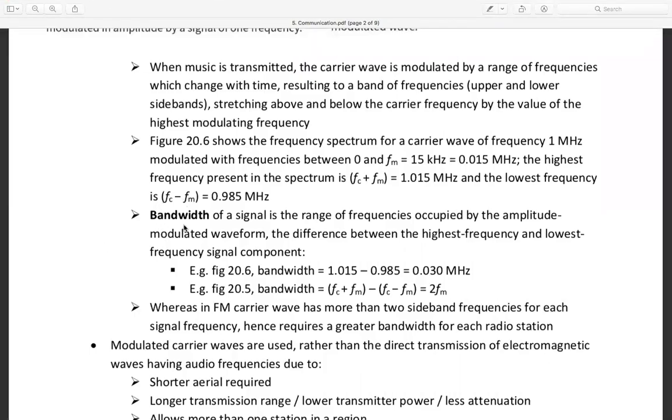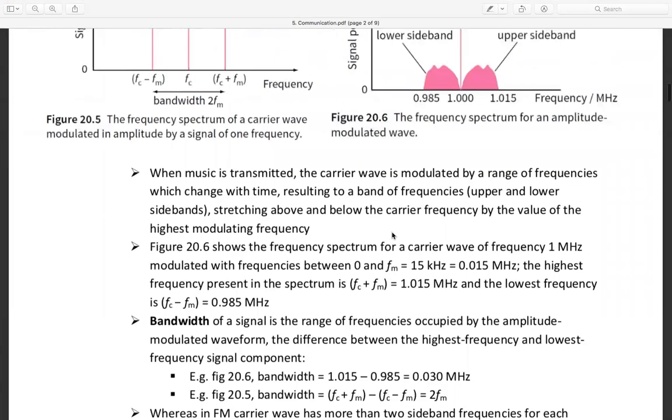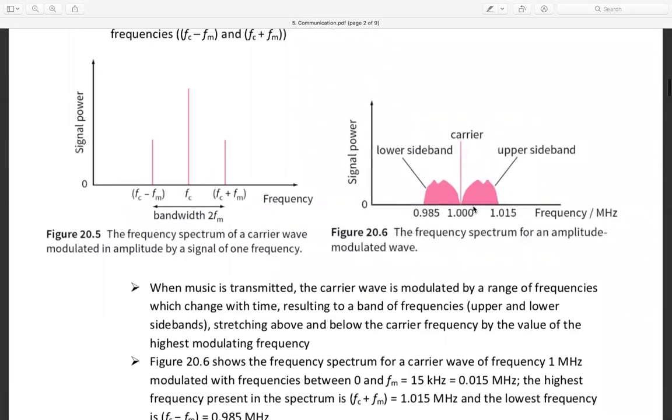Bandwidth of the signal is the frequency range occupied by amplitude modulated wave, from the difference between the highest frequency and the lowest frequency signal component. Bandwidth equals 1.015 minus 0.9 plus equals 0.03. The bandwidth equals frequency carrier plus frequency modulation minus frequency carrier minus frequency modulation.